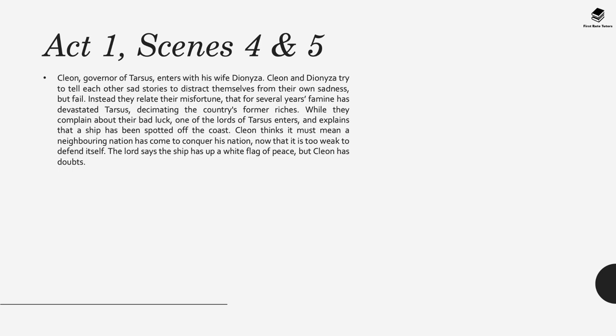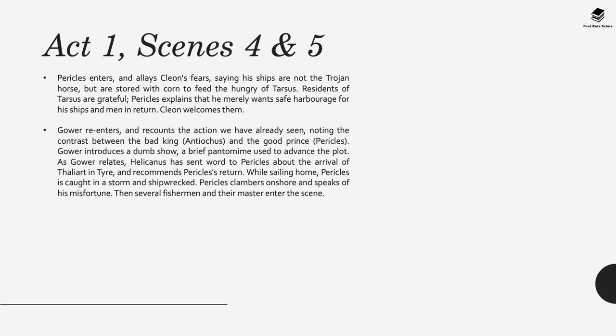In Act 1, Scenes 4 and 5, Cleon, governor of Tarsus, enters with his wife Dionysa. They try to distract themselves from their sadness but fail, and relate that famine has devastated Tarsus. A lord enters to say a ship has been spotted off the coast. Cleon fears a neighbouring nation has come to conquer the weakened Tarsus, but the lord says the ship has raised a white flag of peace. Pericles then enters and allays Cleon's fears, saying his ships are stored with corn to feed the hungry of Tarsus. The residents are grateful and Cleon welcomes them.